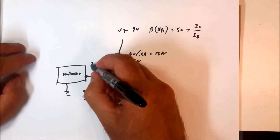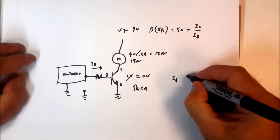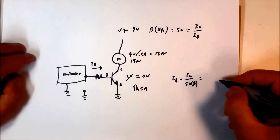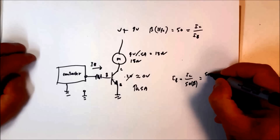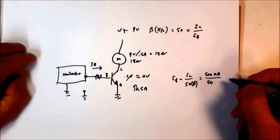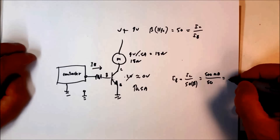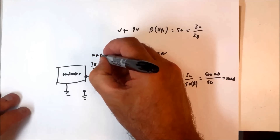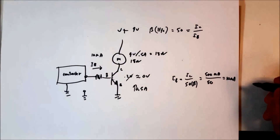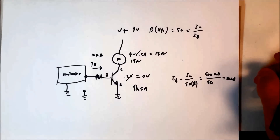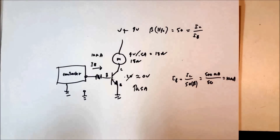To find our base current, we just need to take our collector current and divide it by 50, which is our beta. So we'll have 500 milliamps divided by 50, which equals 10 milliamps. So I_B needs to be 10 milliamps, and at 10 milliamps it will provide 500 milliamps through the transistor. The driver for transistor current is base current — collector current will be whatever base current tells it to be.